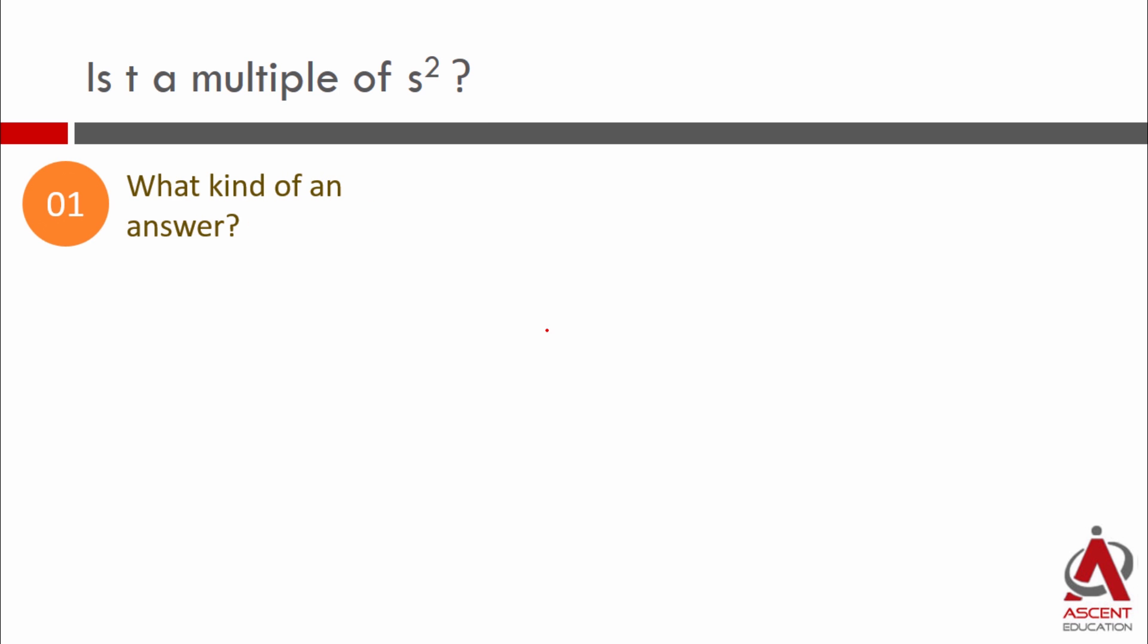The first one being what kind of an answer is the question. So the answer is going to be a yes or the answer should be a no. The second question that we usually ask is when is the data sufficient.